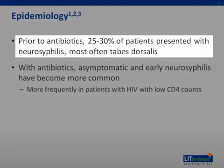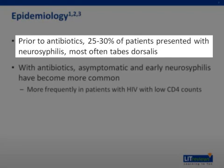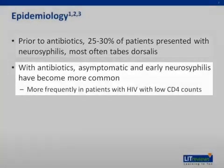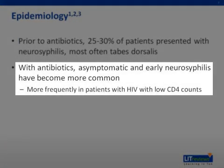In the pre-antibiotic era, 25% to 30% of patients presented with neurosyphilis, with the most common manifestation being tabes dorsalis. Since the widespread use of antibiotics, asymptomatic and early neurosyphilis have been more common, including syphilitic meningitis, meningovasculitis, and syphilitic eye disease. These are more frequently seen in patients with HIV infections, particularly those with lower CD4 T cell counts.